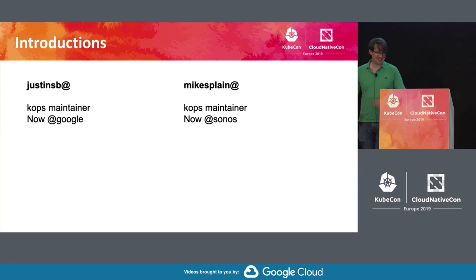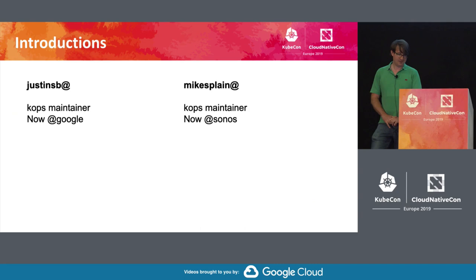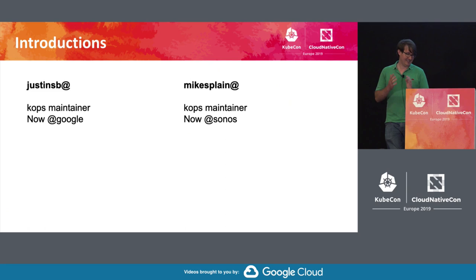I'm Justin Santa Barbara, Justin SB on GitHub and Slack. I am a KOPS maintainer. I originally been involved in communities for a while, particularly on the AWS side, and I was one of the people that started the KOPS project — came out of the need for a better QBAP script. I now work at Google and am pretty active generally.